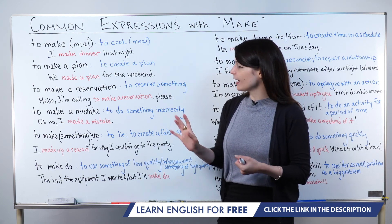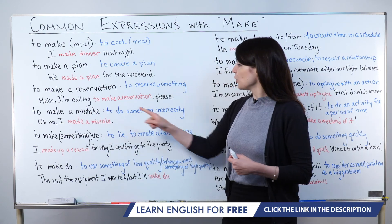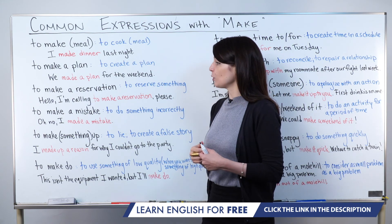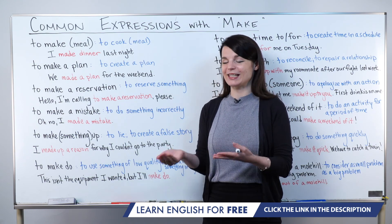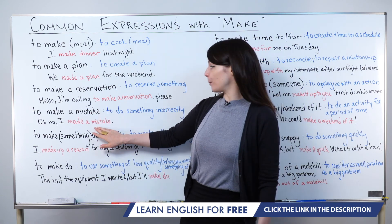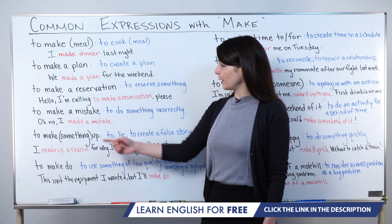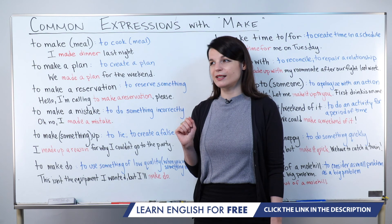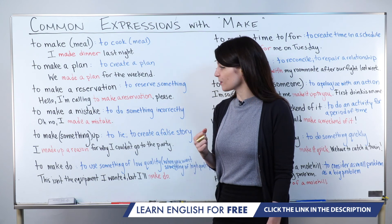Let's move on to the next one — also extremely common: to make a mistake. To make a mistake means to do something incorrectly. This is a very common expression because we make lots of mistakes. To express that, you can say: Oh no, I made a mistake. Past tense 'made.' I made a mistake — not 'I mistaked,' but I made a mistake. So I did something incorrectly.